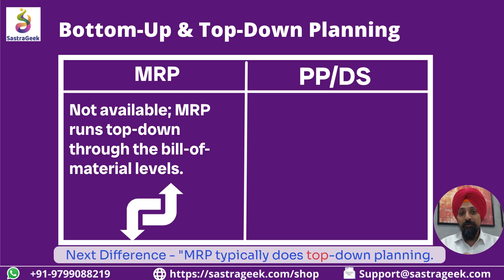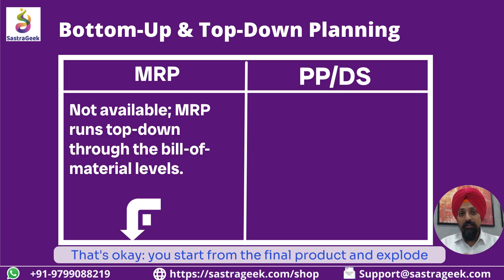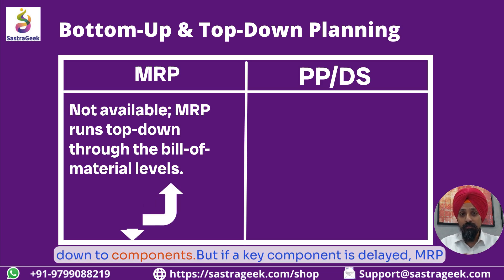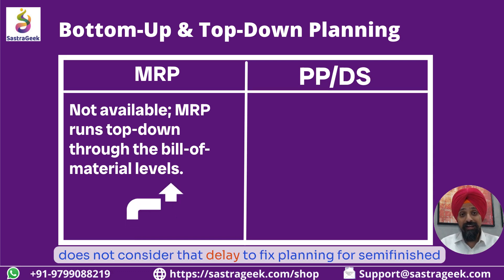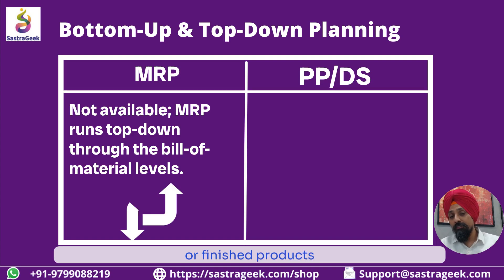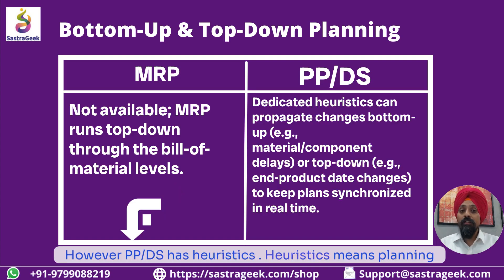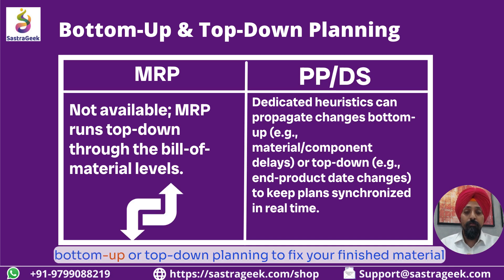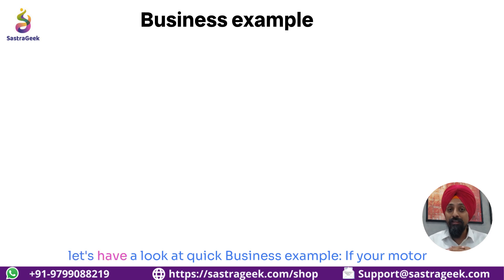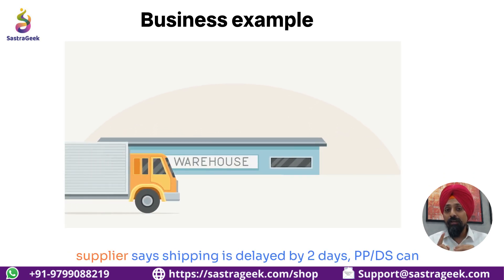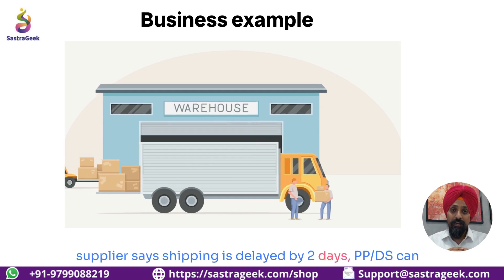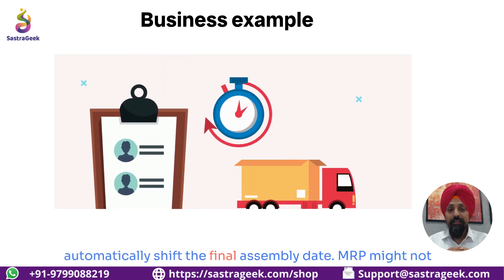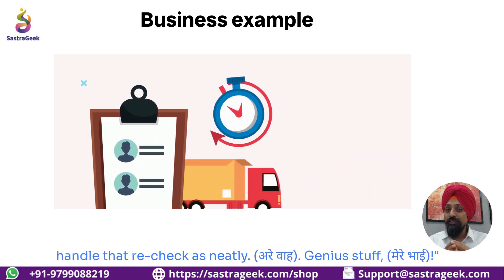Next difference: MRP typically does top-down planning — you start from the final product and explode down to components. But if a key component is delayed, MRP does not consider that delay to fix planning for semi-finished or finished products. However, PPDS has heuristics — planning with special rules and algorithms that let you do bottom-up or top-down planning to fix your finished material schedule based on raw material details. For example, if your motor supplier says shipping is delayed by two days, PPDS can automatically shift the final assembly date. MRP might not handle that recheck as neatly.